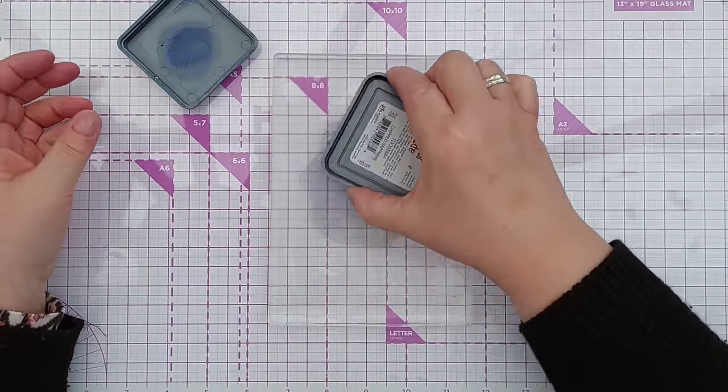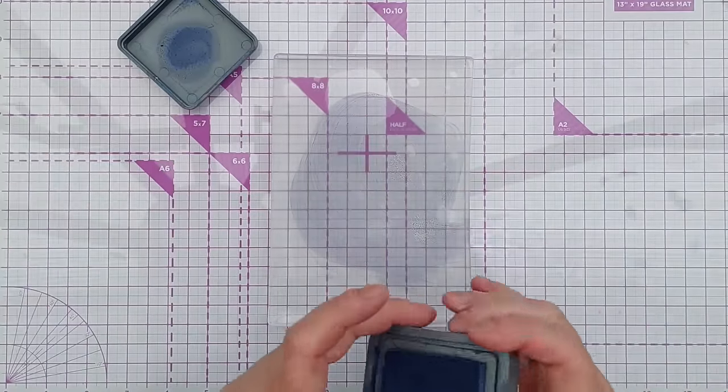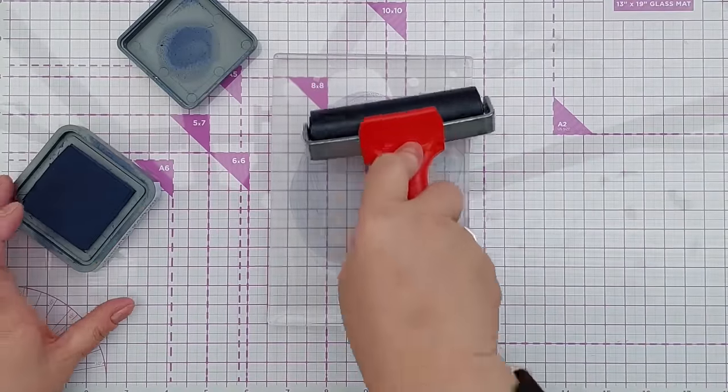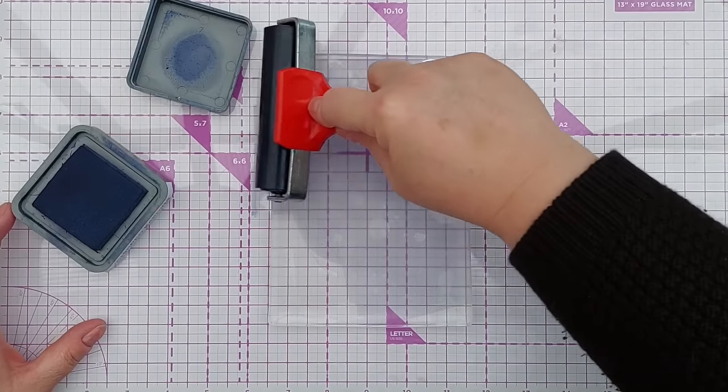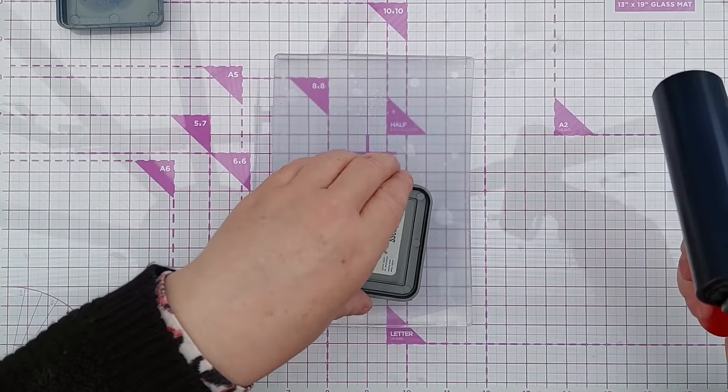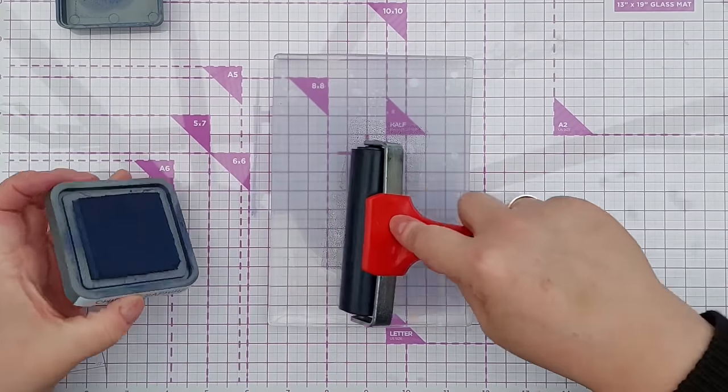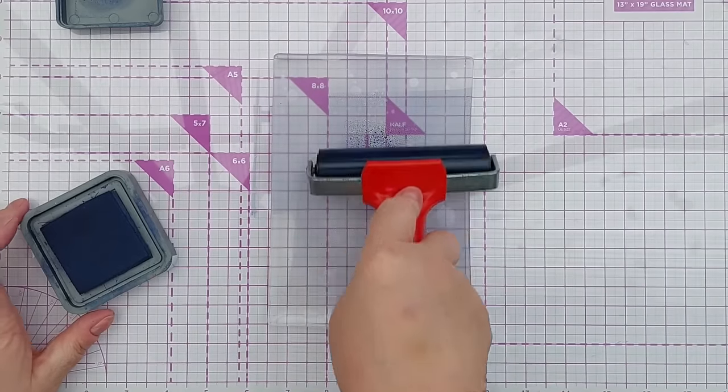To kick off this session I've got some chipped sapphire distress oxide and I'm going to roll a nice even coat on my gel plate.